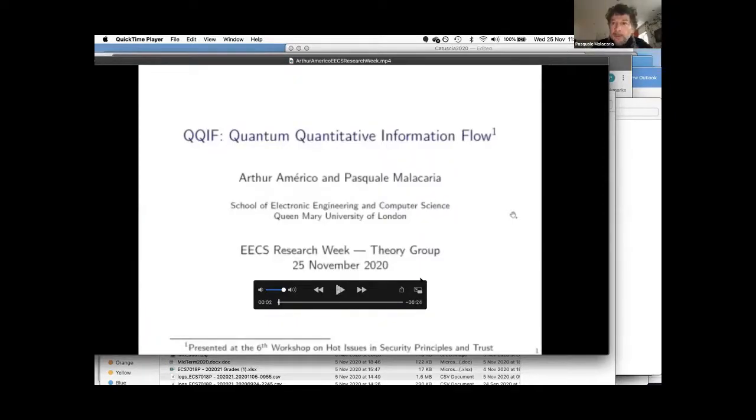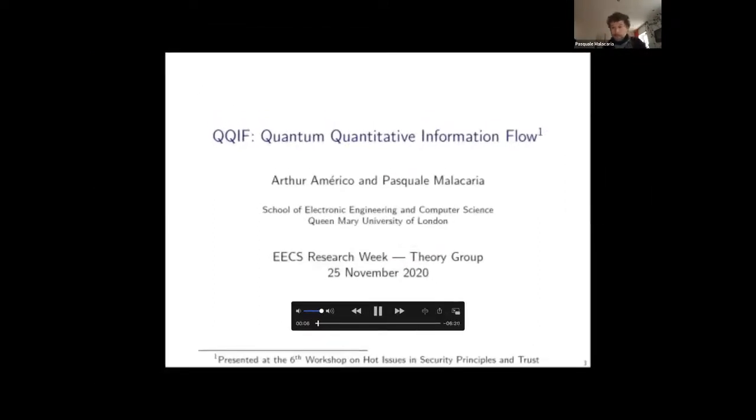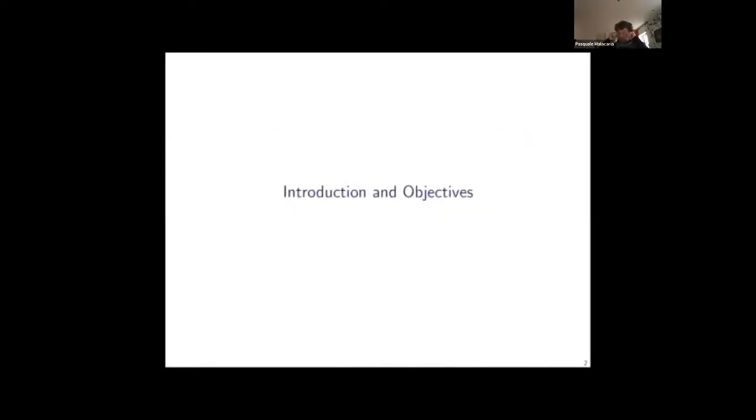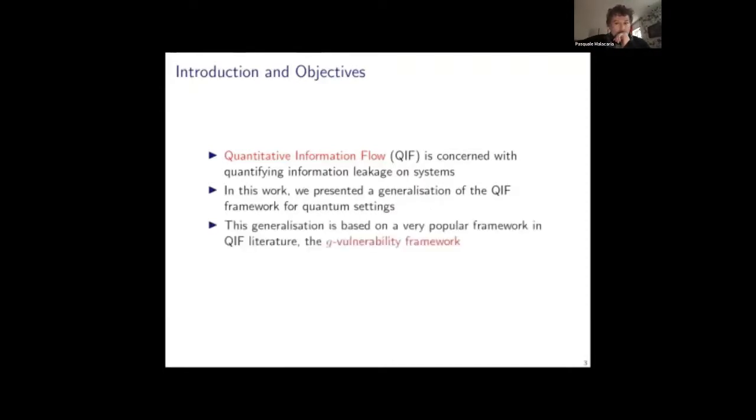Good morning, everyone. Can you see, okay? My name is Arthur Américo. I'm a PhD student in Computer Science at Queen Mary, and I'm going to present work that I did with my advisor, Pasquale Malacaria. So, first, some introduction and objectives. The field of quantitative information flow, which we call simply QIF, is concerned with quantifying information leakage on systems. In this work, we present a generalization of the QIF framework for quantum settings. This generalization is based on a very popular framework in QIF literature, the G-vulnerability framework, and also on the field of quantum statistical decision theory.